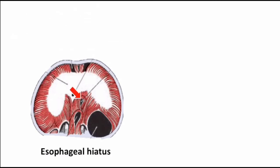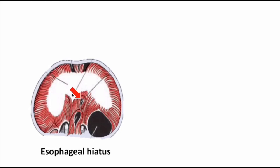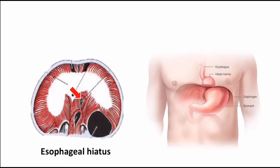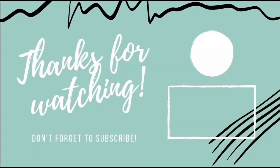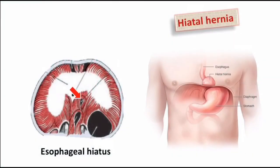If the esophageal hiatus is malformed due to weakness of the muscle, or if the esophagus is congenitally short, herniation may occur through this opening. This is known as hiatal hernia. In this picture you can see the stomach has protruded through the opening. So far we have discussed the clinical conditions in relation to development of body cavities and the diaphragm.